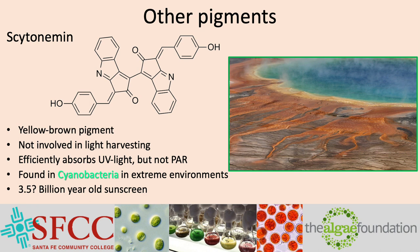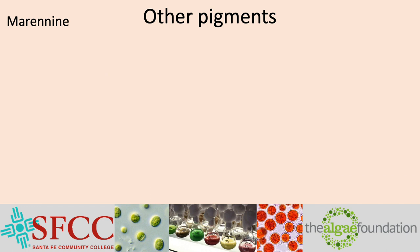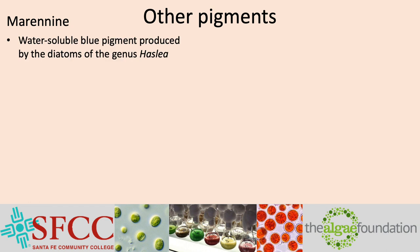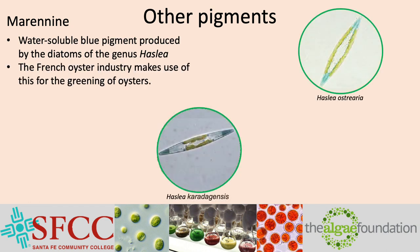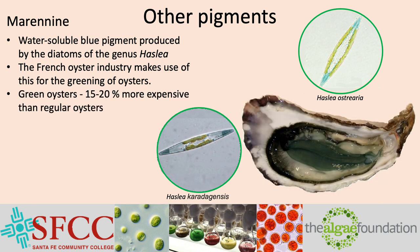Scytonemin may eventually be the sunscreen you use at the beach — it blocks a wider range of the UV spectrum than any other commercial sunscreen and it turns your skin brown. Another valuable non-photosynthetic pigment found in algae is marennine, a water-soluble blue pigment produced by diatoms of the genus Haslea. In France, these diatoms are fed to oysters to turn their flesh green, and green oysters are 15–20% more expensive than regular oysters at market. The structure of marennine is unknown — it is possibly a polysaccharide or polyphenol, which is a sugar-based molecule.